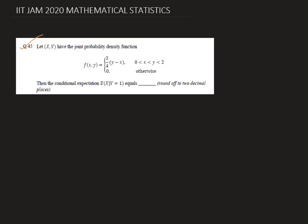Let's see what is in this problem. We are given a joint density of the random variables x and y as 3 by 4 y minus x, where x is less than y in between 0 to 2. Now we have to find the conditional expectation of x given y equals to 1.